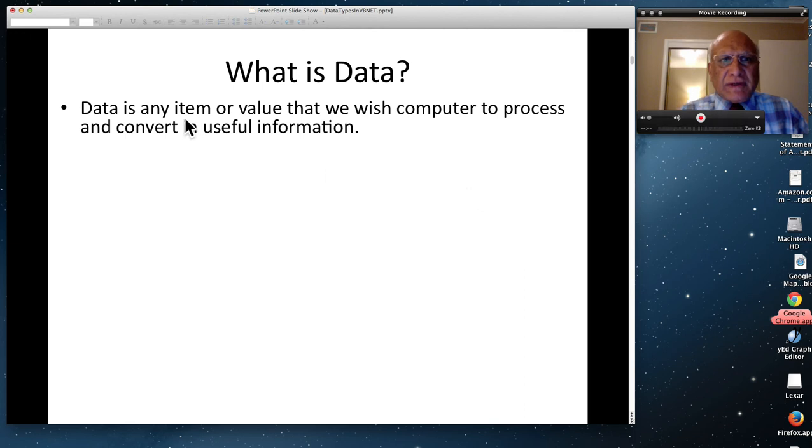Data is actually any item or value that we wish computer to process and convert to useful information. Computers do nothing but they process raw data and provide you useful information. For example, weather data can be processed to produce useful information in terms of warning systems for hurricanes, tornadoes, tsunamis, and so on. Taking the weather data and making weather prediction to save human lives is one prime example of data processing, converting raw data into useful information.